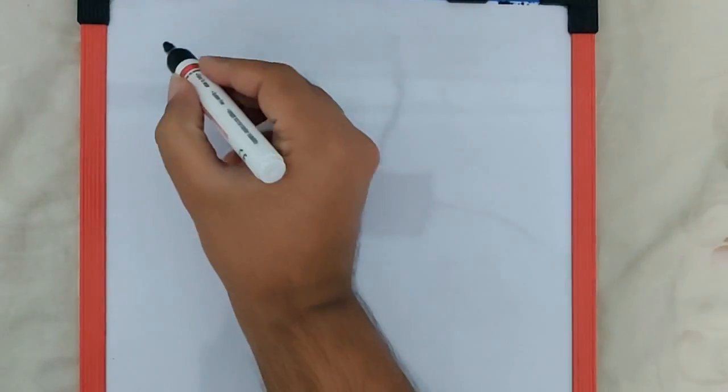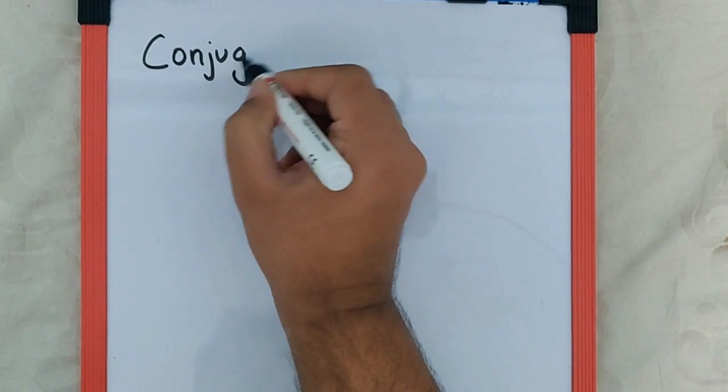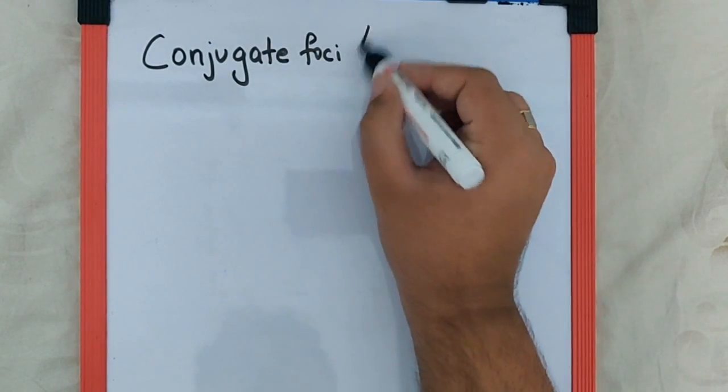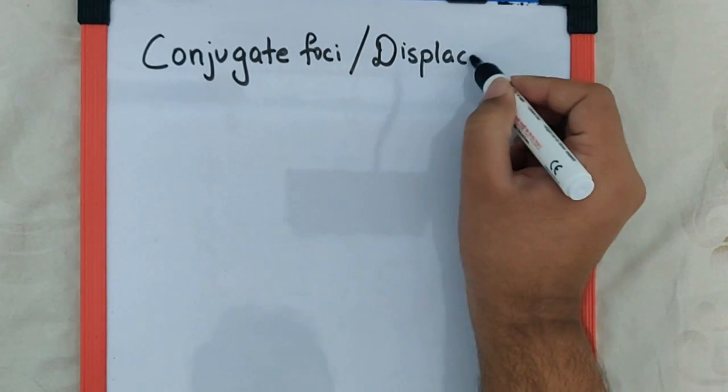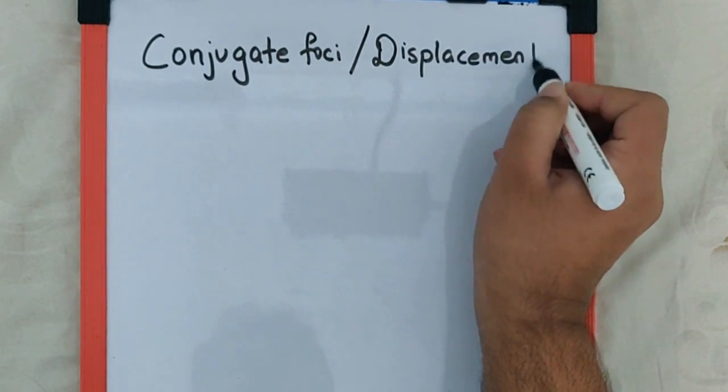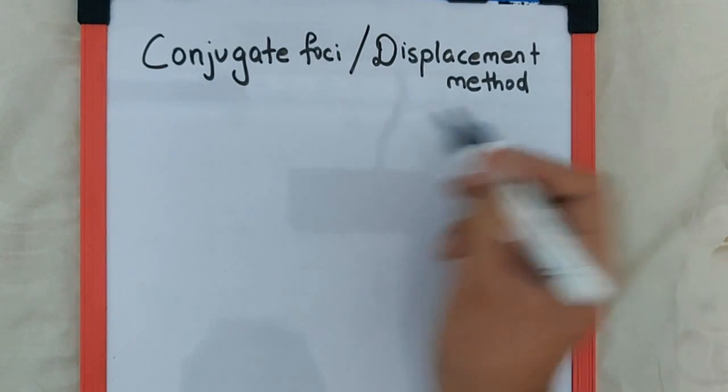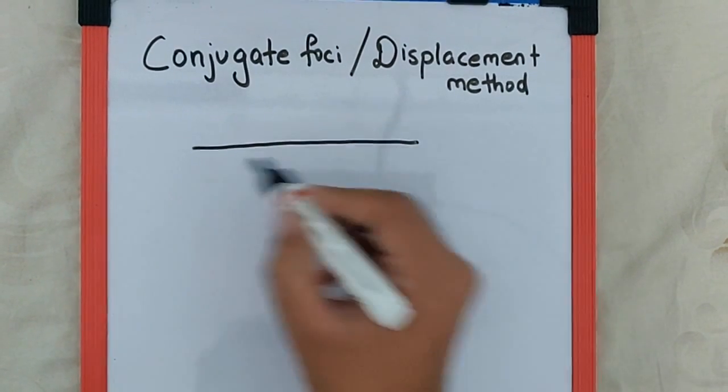We are going to learn what exactly is conjugate foci or the displacement method provided by Newton. Basically, if we assume that on a principal axis,